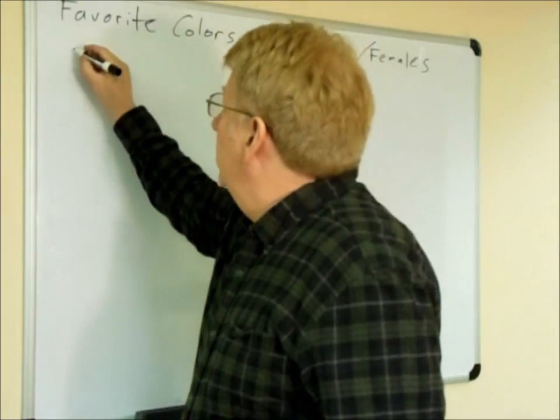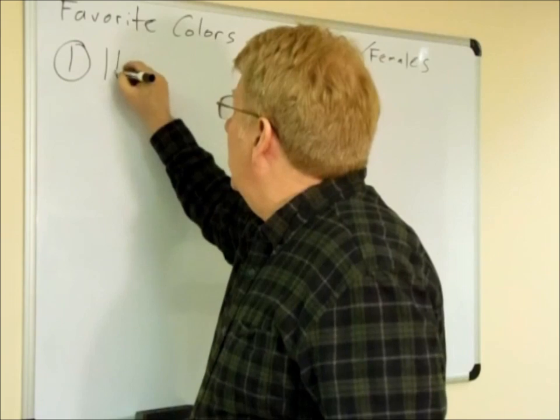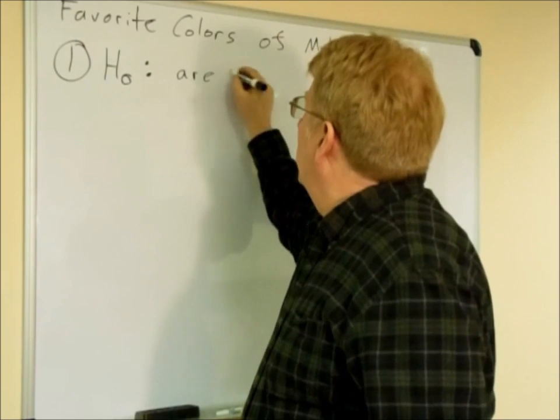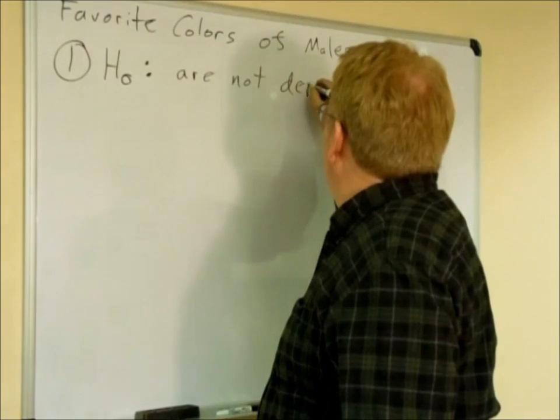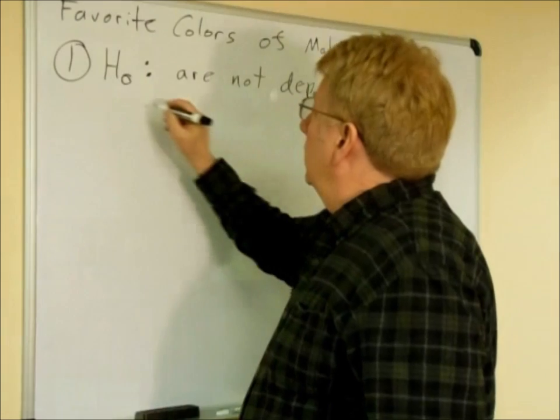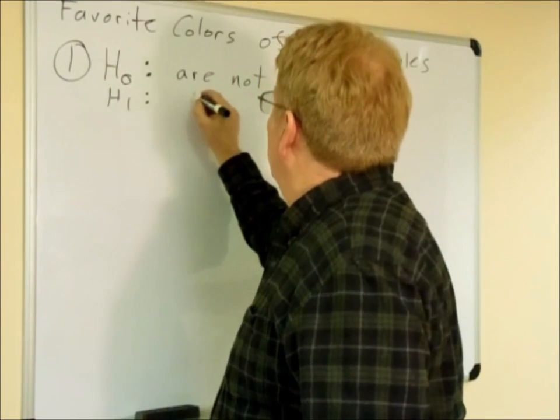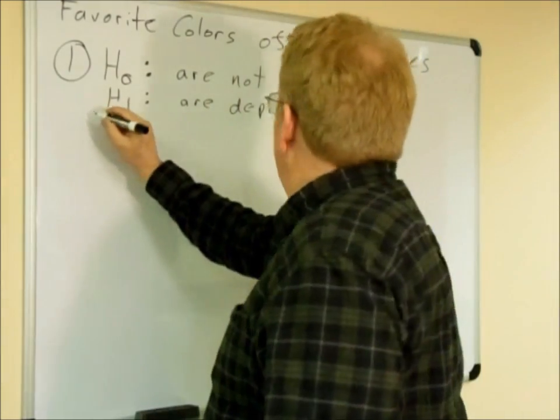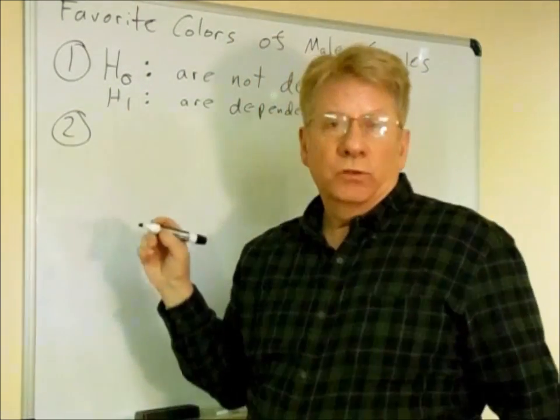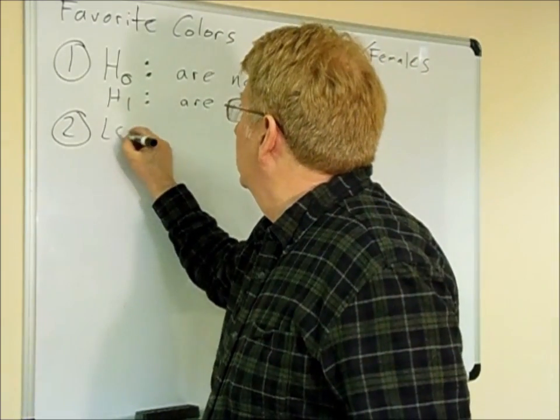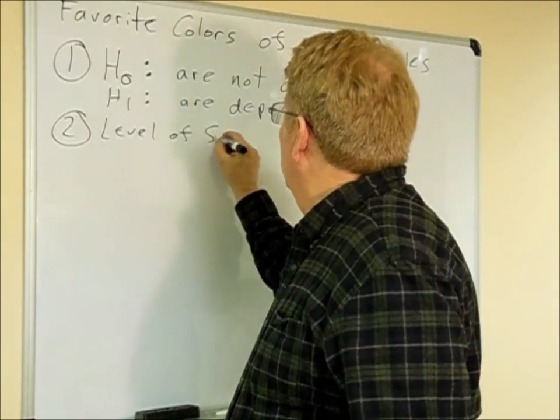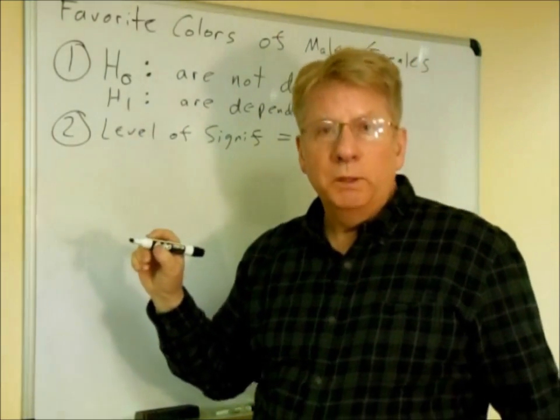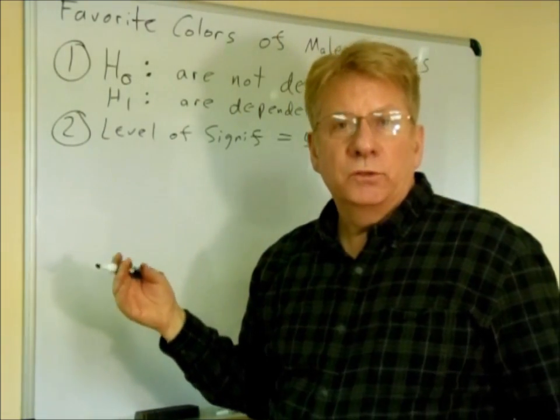The first thing we're going to do for the chi-squared independence test is we're going to have a null hypothesis that's going to say that the colors and gender are not dependent on one another. And the alternate hypothesis is going to be that they are dependent. The second thing is the level of significance, and I'm just going to select the level of significance of 5%. And that's going to be used when we look at the final p-value to determine whether the null hypothesis is true or not.